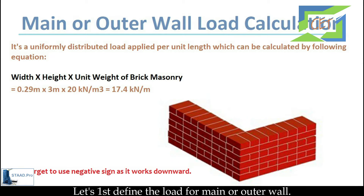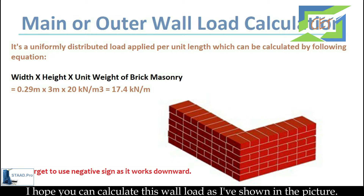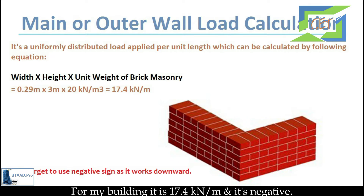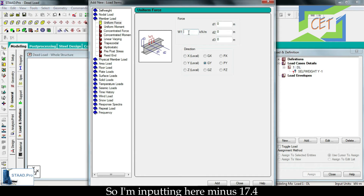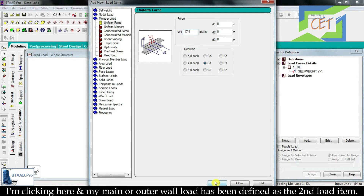Let's first define the load for the main or outer wall. It is a uniformly distributed load applied per unit length. For my building it is 17.4 kN per meter, and it is negative, so I am inputting minus 17.4. Then I go for the add option, and my main or outer wall load has been defined as the second load item.